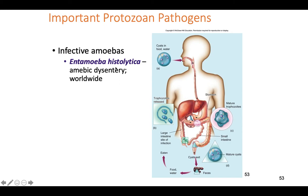Entamoeba histolytica causes amoebic dysentery — dysentery meaning bloody diarrhea. It's spread worldwide by contaminated water. Cysts of this amoeba can survive chemicals like chlorine in water treatment plants. If you get cysts inside your mouth or nose, they can enter your stomach and intestines, un-cyst, and release trophozoites. These cause serious dysentery. They're shed through feces as the organism forms cysts inside your intestines, which you then pass. Amoebic dysentery is very common worldwide.